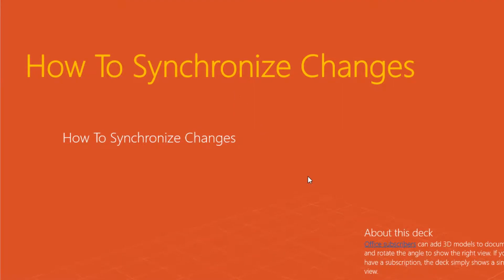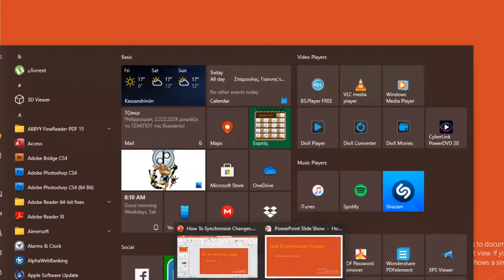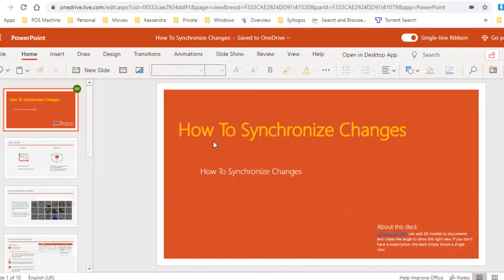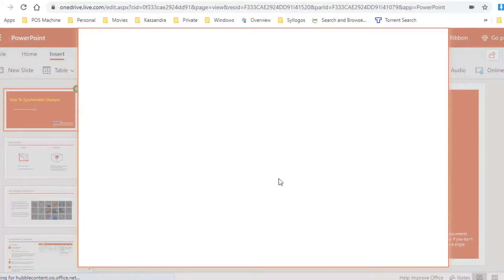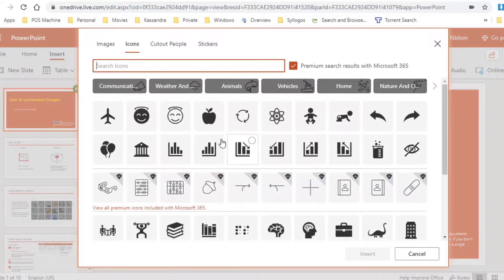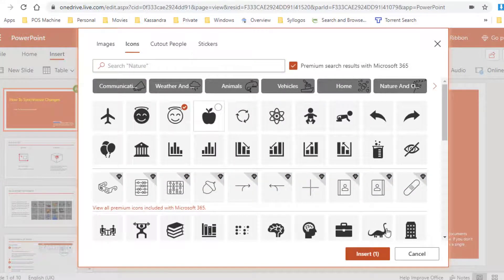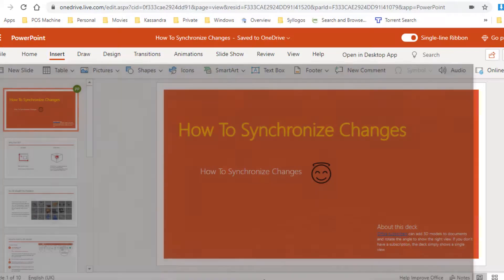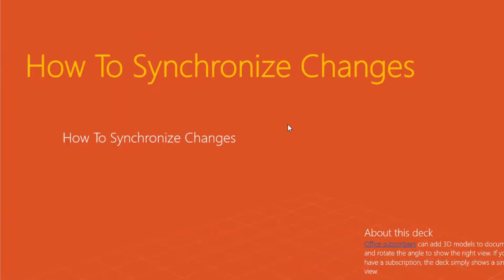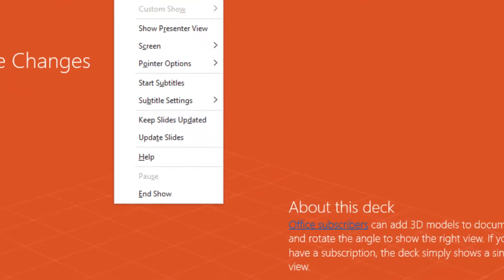I am going to move again to my OneDrive PowerPoint presentation and I am going to insert an icon here — a smiley face — and insert it. The smiley face has been inserted in my slide. I am going to move back to the PowerPoint presentation. Nothing has happened yet, so in order to synchronize the changes, I must do a right-click, and from the shortcut menu that appears, I am going to select 'Update Slides.'